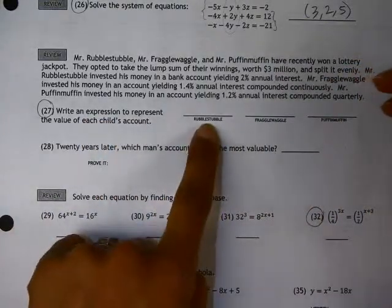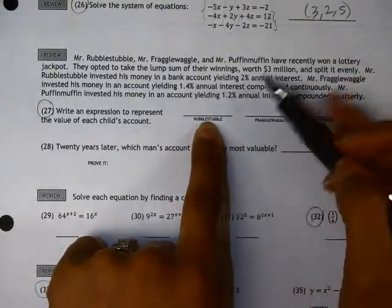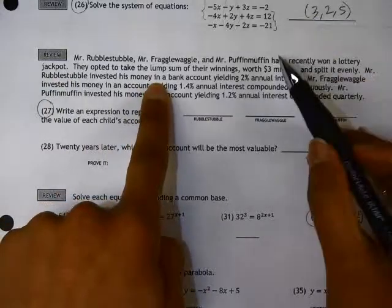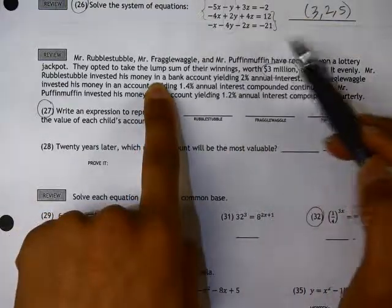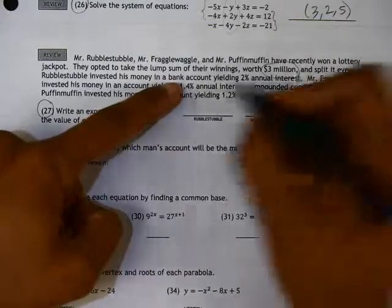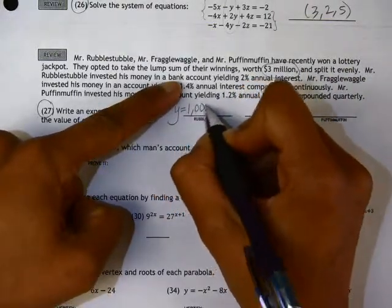So Rubble Stubble got 3 million divided by 3 people, because the lump sum was 3 million and these 3 people divided it evenly. So he put it in a bank account, so $1 million was put into a bank account.